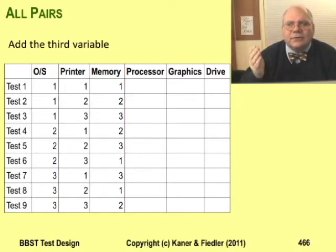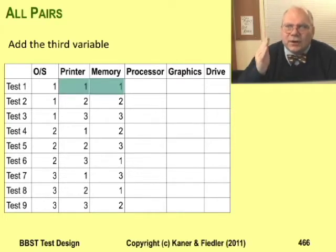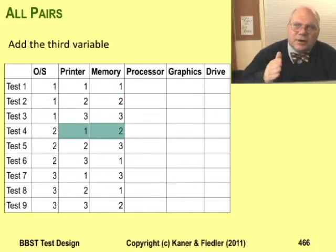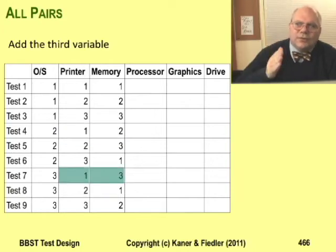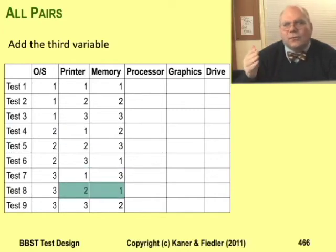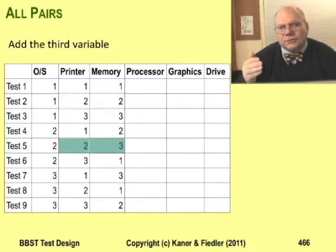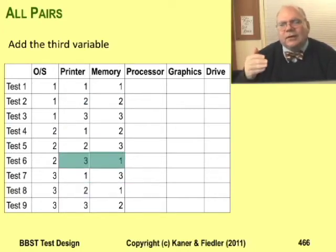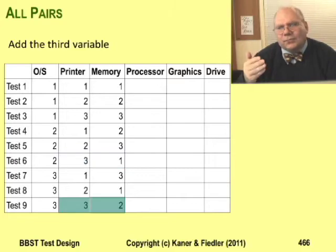Now check the second column with the third. There has to be a printer one with memory one, a printer one with memory two, a one with a three, a two with a one, two, and three, and a three with a one, a three with a two, and a three with a three.